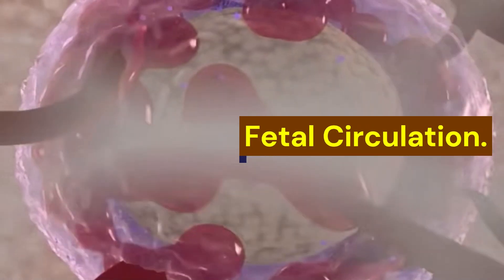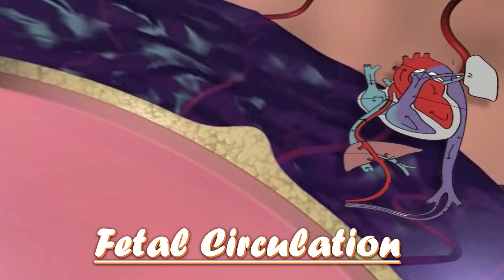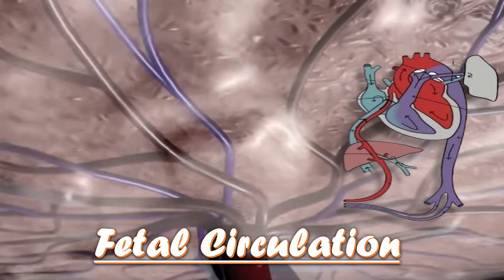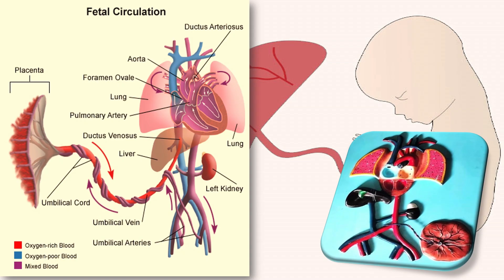Fetal circulation is an intricate system that allows the fetus to receive oxygenated blood and nutrients from the placenta. It is comprised of the blood vessels in the placenta and umbilical cord, which contains two umbilical arteries and one umbilical vein. The oxygenated blood is returned to the fetus via the umbilical vein to the liver. A small proportion of the blood oxygenates the liver, but the bulk passes through the ductus venosus to bypass the liver and joins the inferior vena cava as it enters the right atrium.